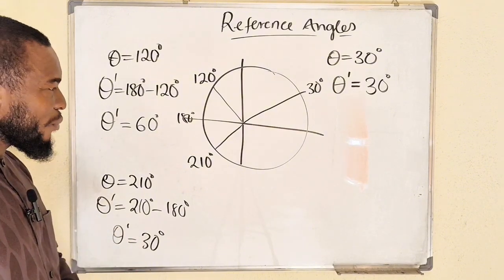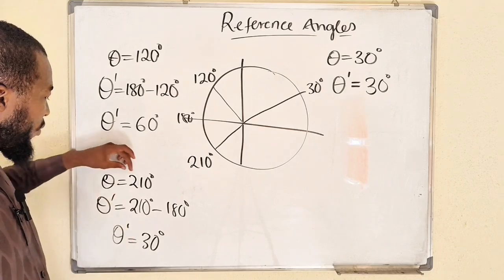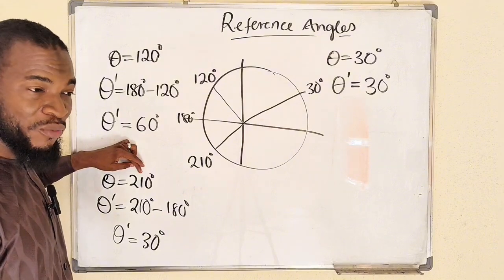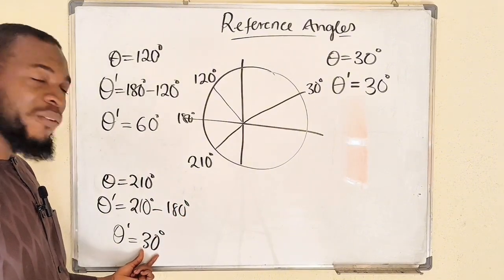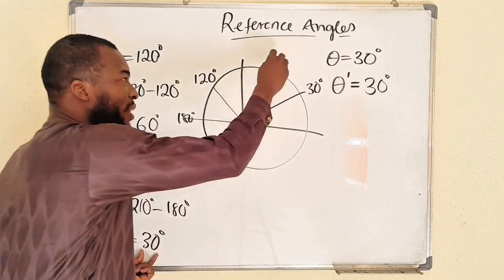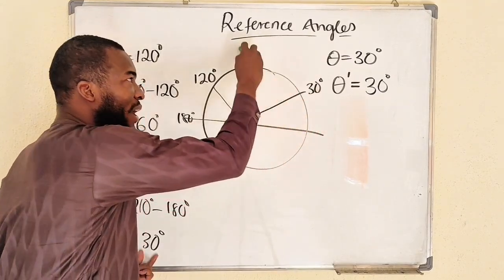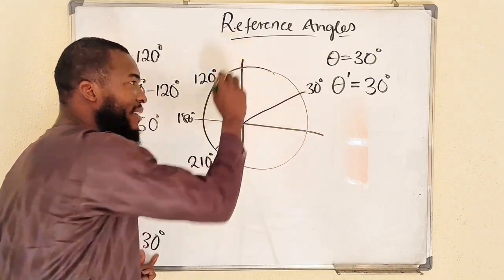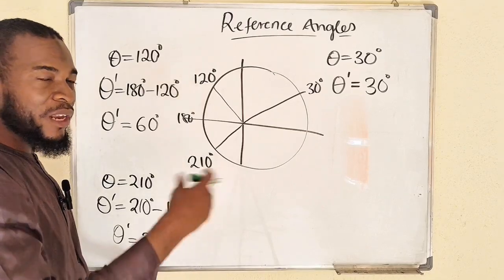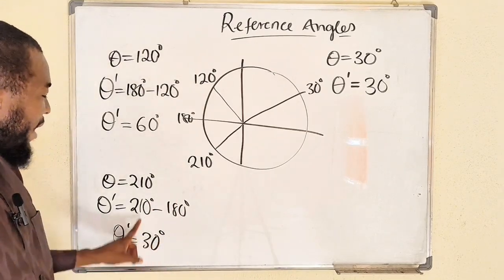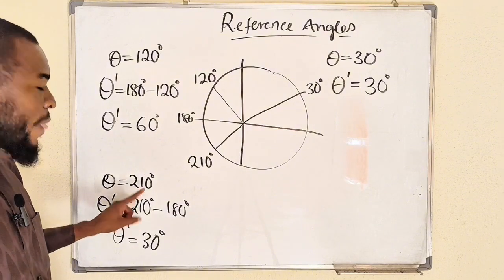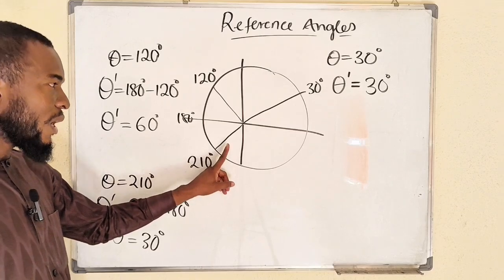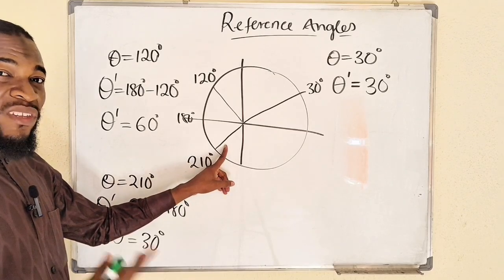This is why we need reference angles — it is very important. For instance, if you want to find the sine of 210 degrees, you can simply find the sine of 30 degrees instead, because we have mastered the special angles in the first quadrant: 0, 30, 45, 60, and 90 degrees. We know how to find their ratios — sine, cosine, and tangent. So to find sine of 210 degrees, you first locate its position in the third quadrant.